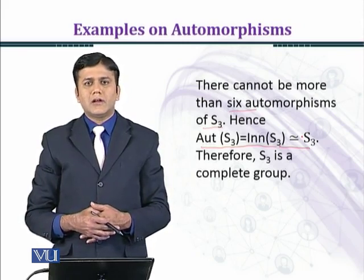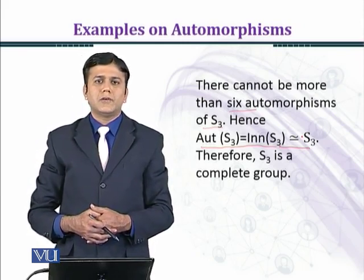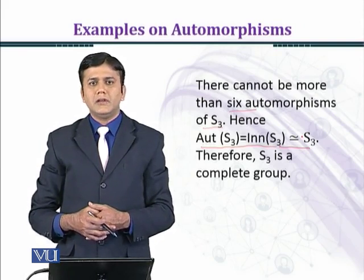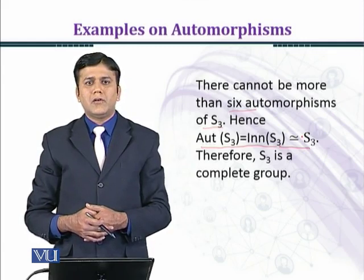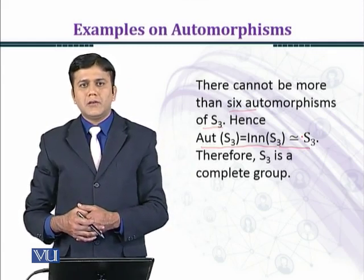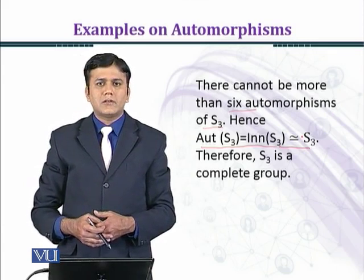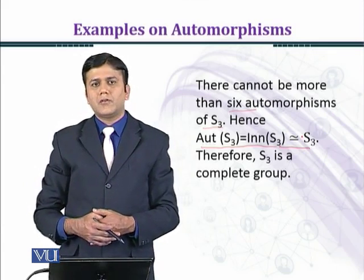And the order 2 elements that were total 3: B, AB, and A scale B. So B can be mapped on B, AB, and A scale B. So total 6 automorphisms when we fix our automorphisms of S3.